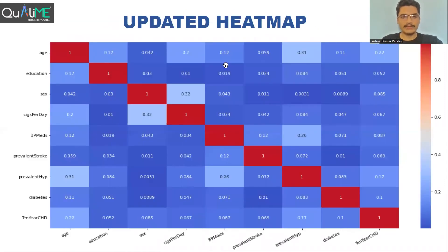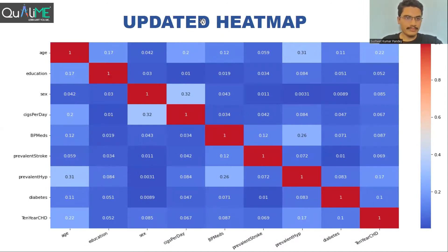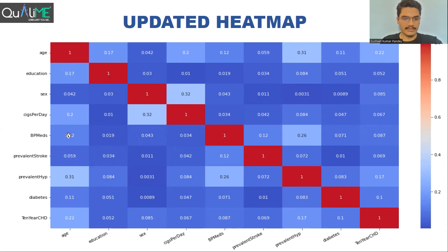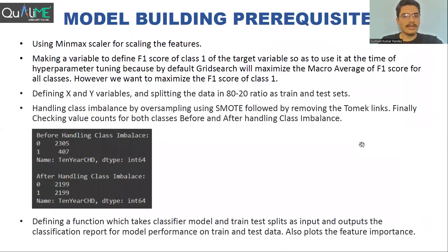After that, we updated the dataset by dropping all unnecessary features. The resulting correlation heatmap looks pretty good — there are no longer highly correlated independent features among the remaining variables.